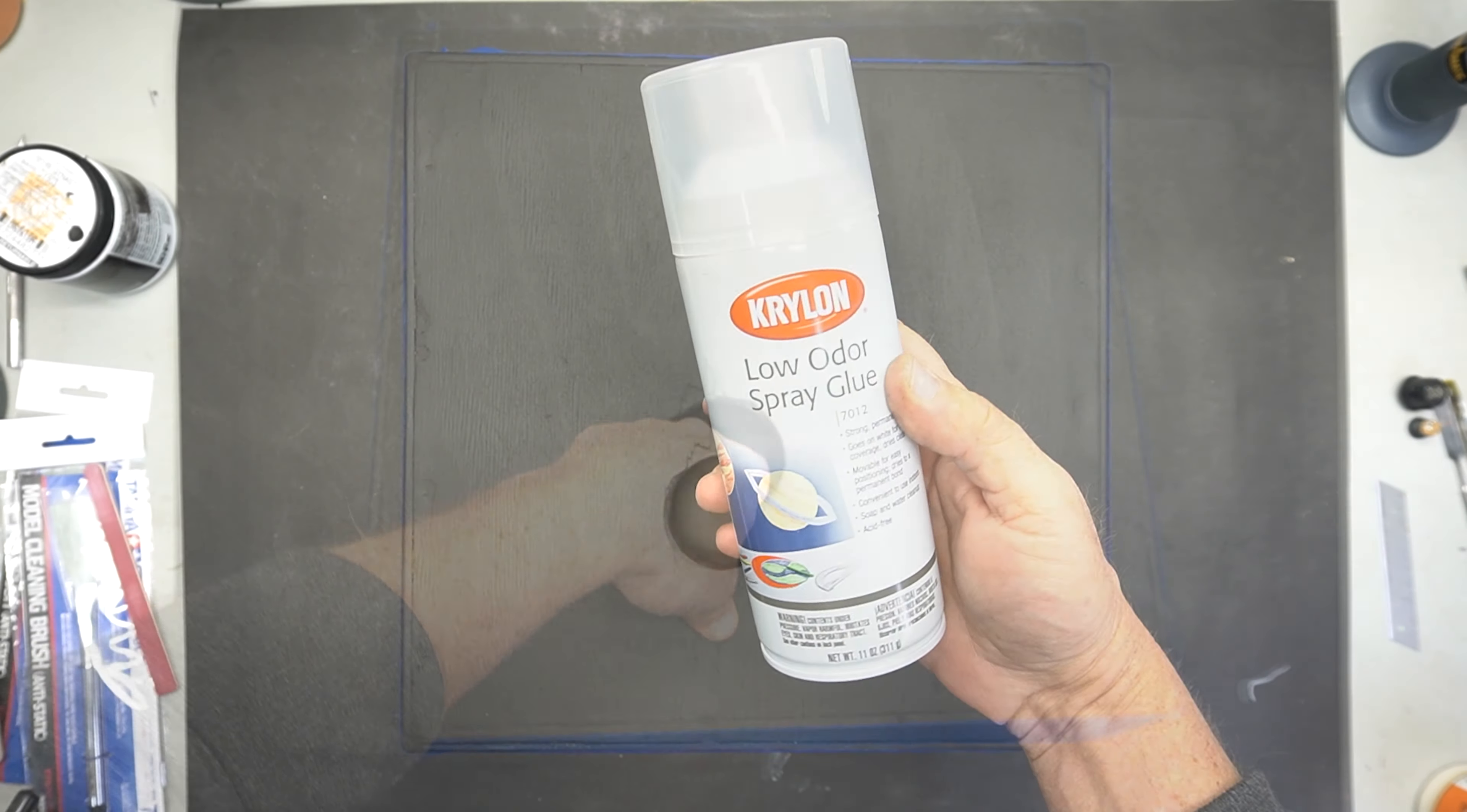I used Krylon low odor spray glue to hold the felt down and this is the problem. I put the full sheet of felt down all at one time and then I was going to cut around the edges with the scissor. This did not work out well. When I cut the edges, I couldn't get a perfect shape around the sides and a lot of it was ripping up.